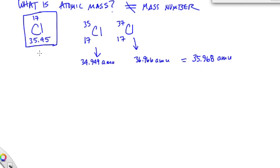Where does this atomic mass come from? What is important to understand is that atomic mass is what we call the weighted average mass of the element, the weighted average mass.